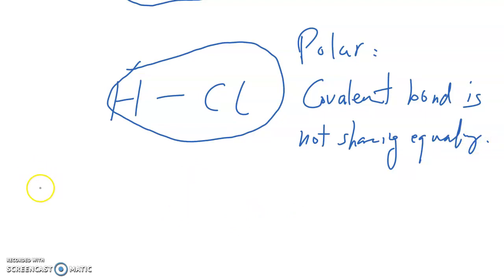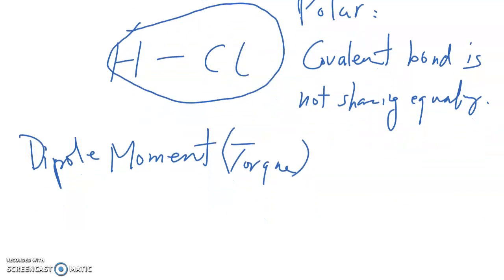The next term is called dipole moment. Another word for moment is torque. That is force times length. In this case, why do we call it dipole moment?